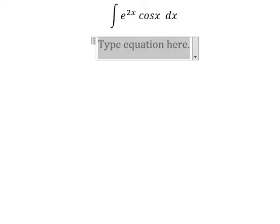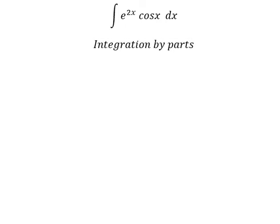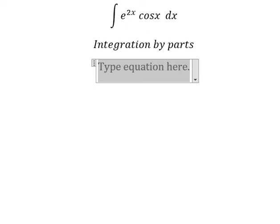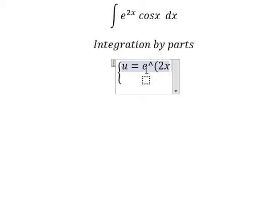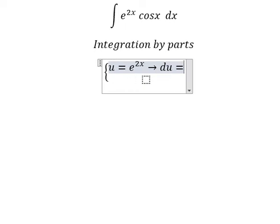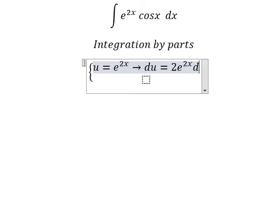We need to use integration by parts. So I need to put u equals to e to the power of 2x. So if we do the first derivative, you got du equals to 2e to the power of 2x dx.